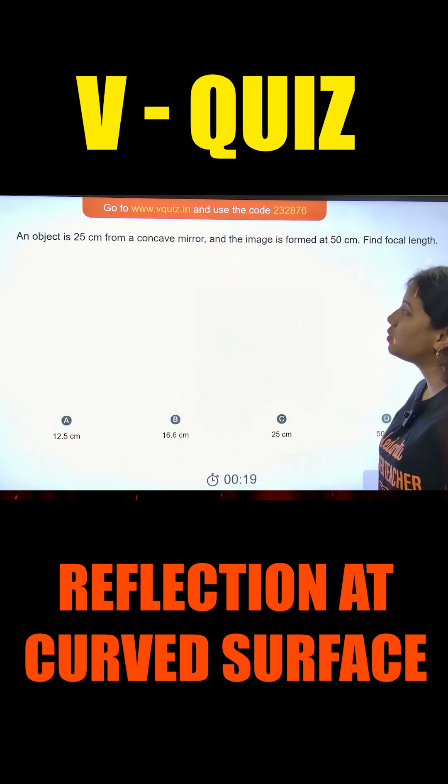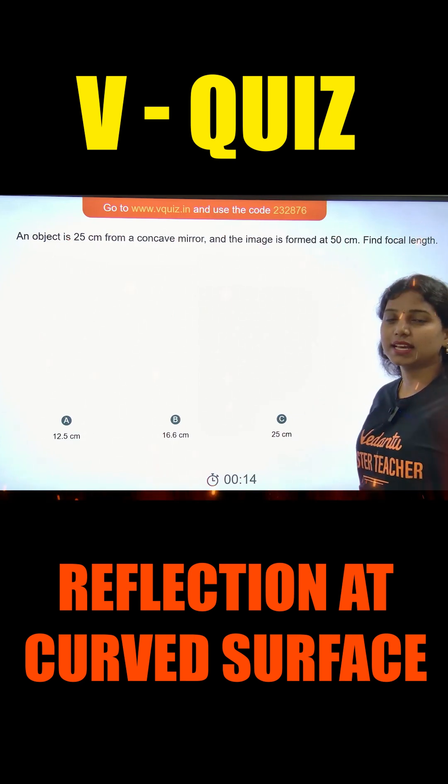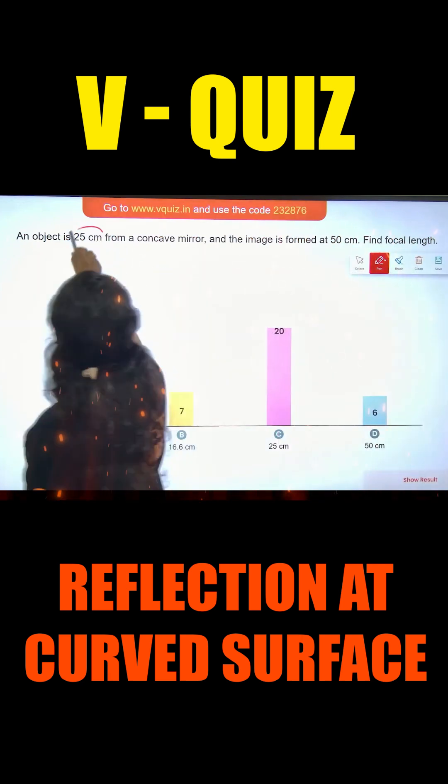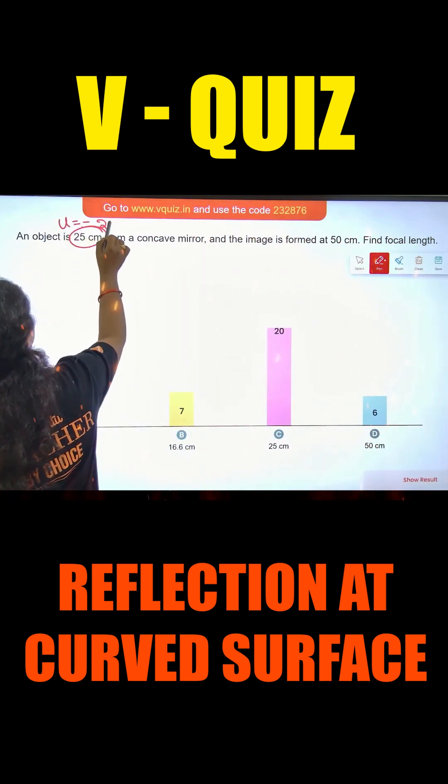Here we have object distance 25 and image distance 50. Object distance is twice, so this object distance U is equal to minus 25 cm.